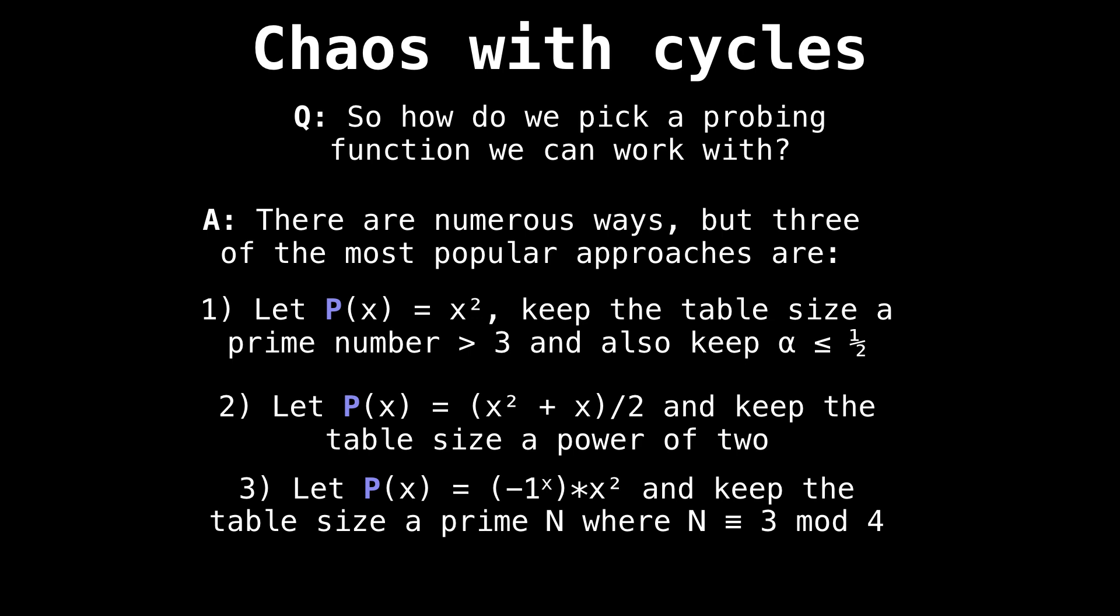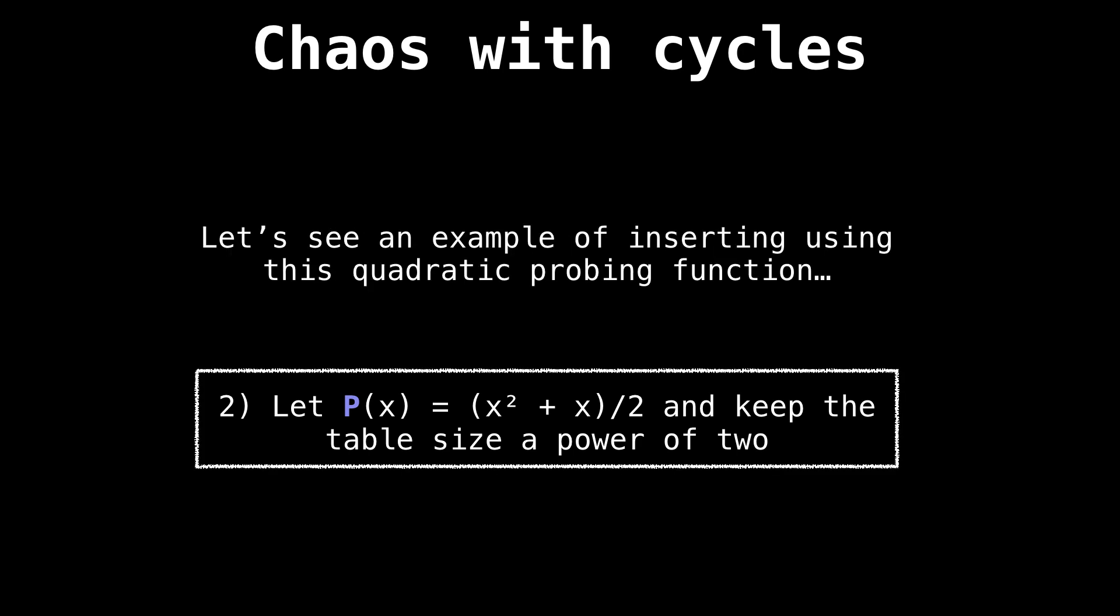So any of these will work, but as you see, they're very specific in how they work and what the table size should be, and that's a common theme in quadratic probing. We're going to focus on the second one where P(x) = (x² + x)/2, and the table size is a power of 2.